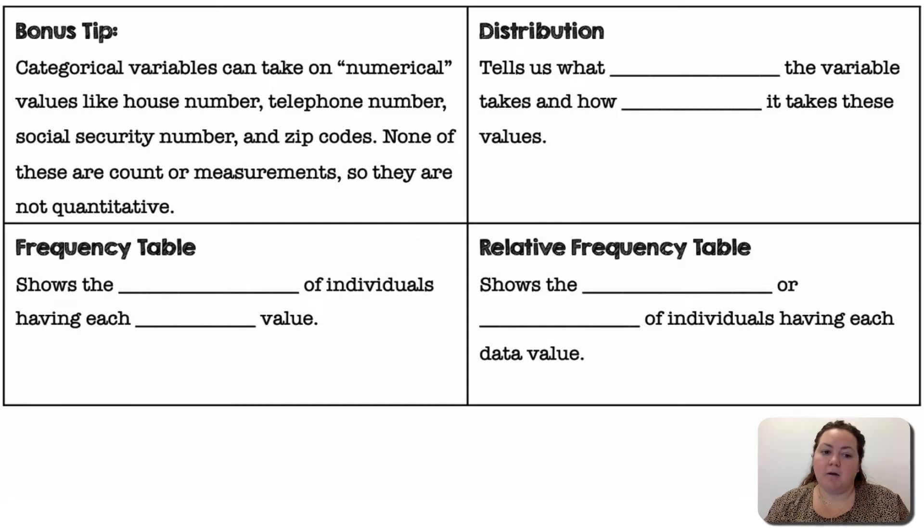Bonus tip. Categorical variables can take on numerical values, like house numbers, telephone numbers, social security numbers, and zip codes. None of these are counts or measurements, so they are not quantitative. So like a zip code is a number, but it's not really tied to doing any sort of math. It wouldn't make sense to collect everybody's zip code and then average them. That would just give you a random number. It's putting you into a category which area you live in.